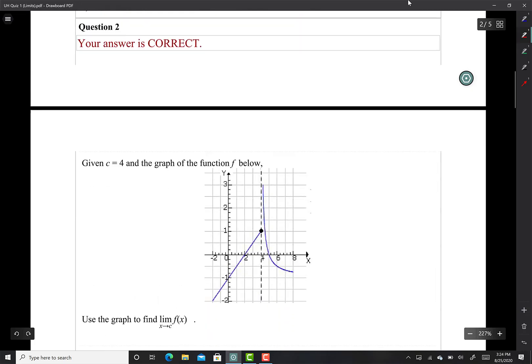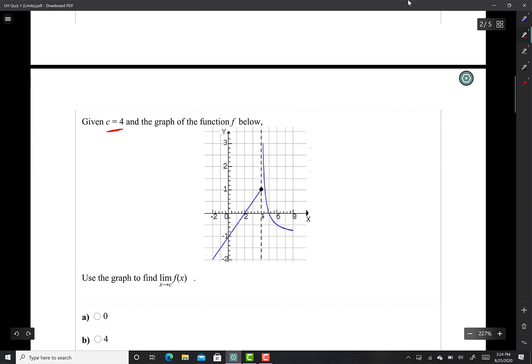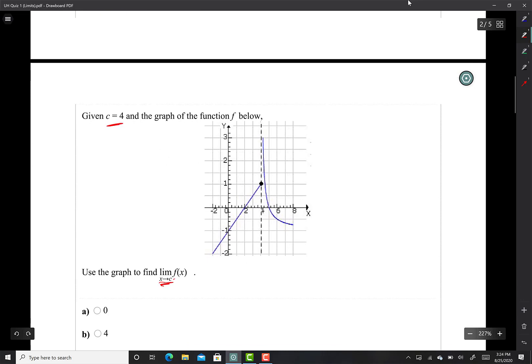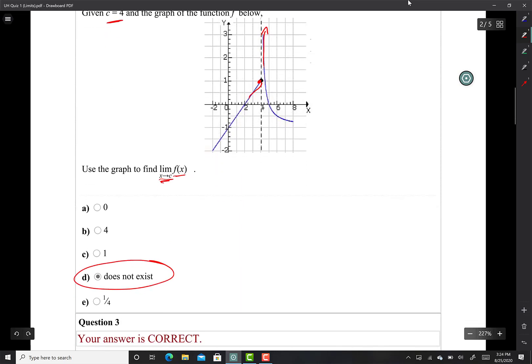This one says C is 4 and they want the limit as x approaches 4 of this function. Well, if I approach 4 from the left it's 1. If I approach 4 from the right it's infinity. Because I'm approaching from both directions and approaching two different things, it does not exist.